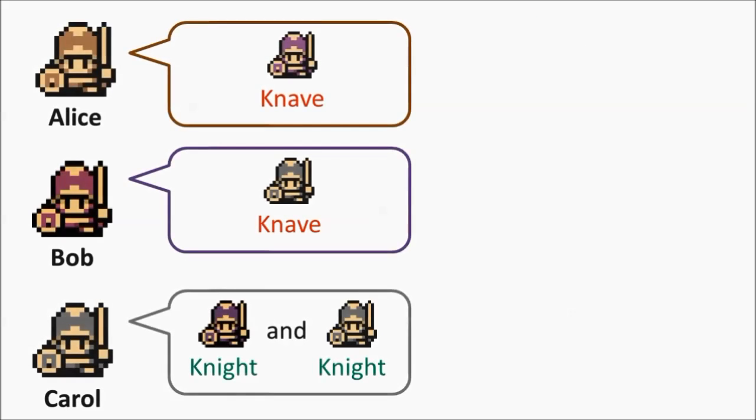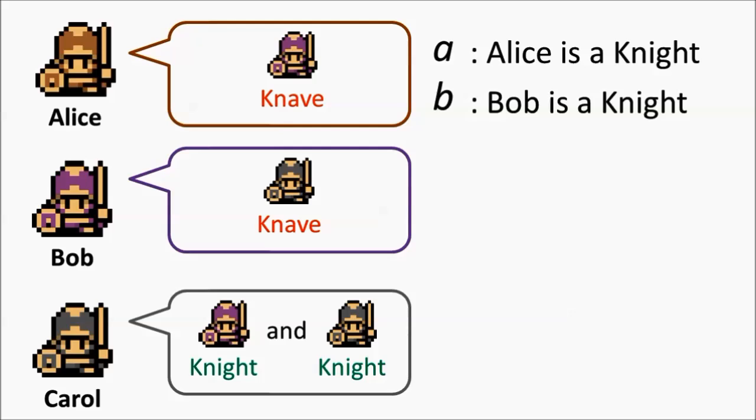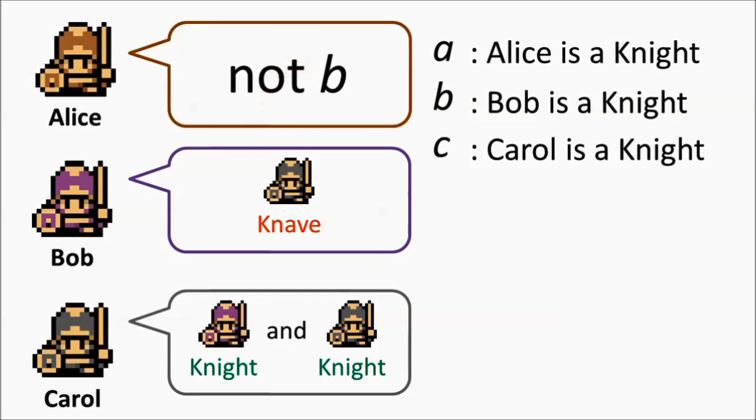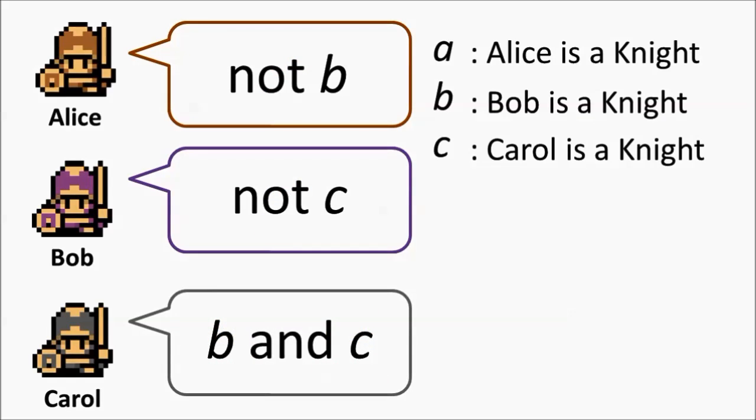Let's take a look at a final example. Here we'll have three Islanders, Alice, Bob, and Carol. Alice says Bob is a liar. Bob says Carol is a liar. Carol says Bob and I tell the truth.